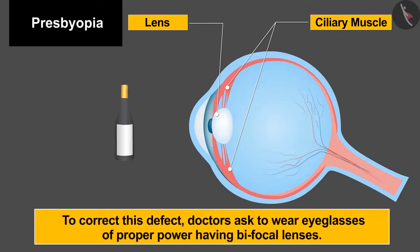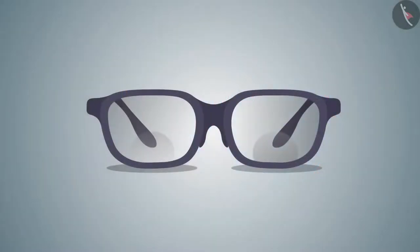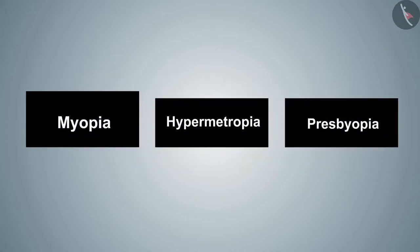To correct this defect, doctors ask to wear eyeglasses of proper power having bifocal lenses. The lower part of these lenses is made up of convex lens and the upper part is made up of concave lens.